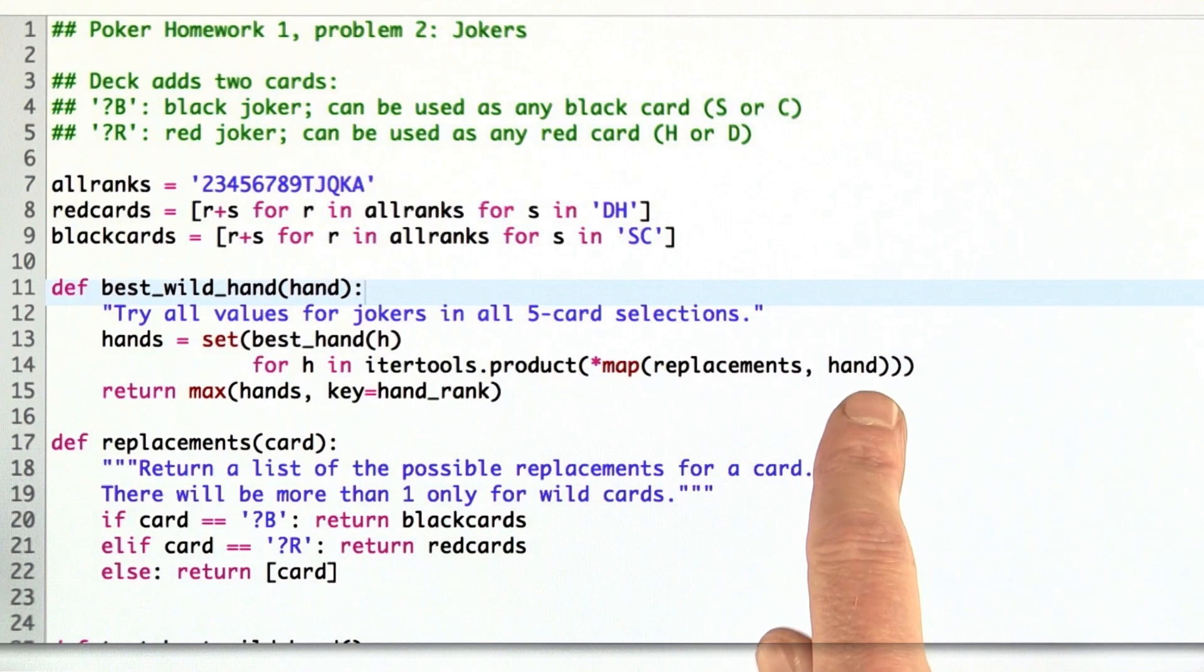For all the seven cards in the hand, we've got this big product, and we go through and we take all the possibilities, and then for each one of those possibilities, H, we pick out the best hand using the process that we did before.